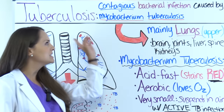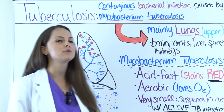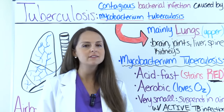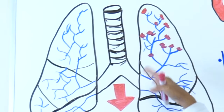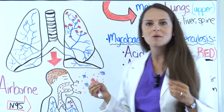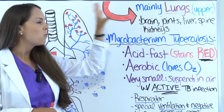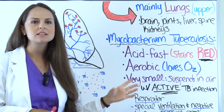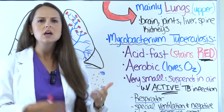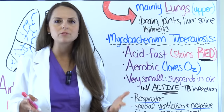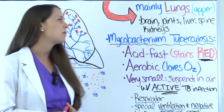Tuberculosis is a contagious bacterial infection caused by mycobacterium tuberculosis, and it tends to mainly affect the lungs — specifically it resides in the upper part of the lungs, the apex. But it's not just limited to the lungs; once it gets in the body it can spread to the lymphatic system and travel to the brain, joints, liver, spine, and kidneys.